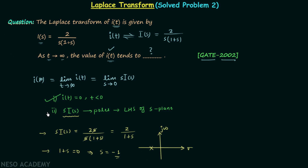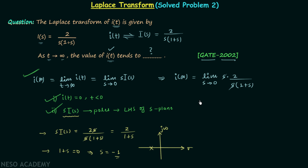Condition number 2 is satisfied, and since both conditions are satisfied we can apply the final value theorem. I(infinity) equals the limit as S tends to 0 of S multiplied by I(S), which is S multiplied by 2 over S multiplied by 1 plus S. S and S cancel, leaving the limit as S tends to 0 of 2 over 1 plus S. Substituting S equal to 0 gives I(infinity) equal to 2 over 1 plus 0, which equals 2.